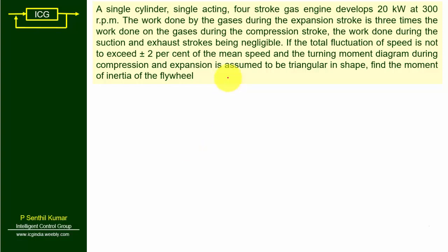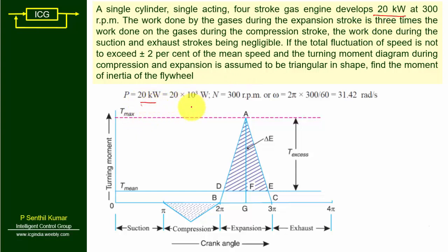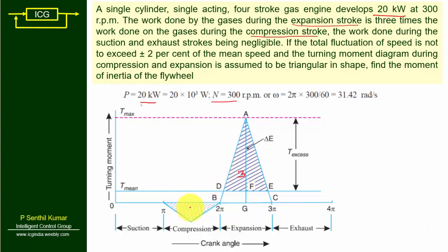In this problem, a single cylinder single acting four-stroke gas engine develops a power of 20 kilowatt at a speed of 300 RPM. From that, omega equals 2π N divided by 60, giving 31.42 radians per second. The work done by the gas during the expansion stroke is three times the work done during the compression stroke.